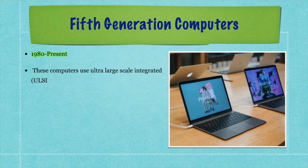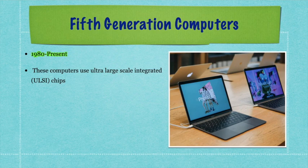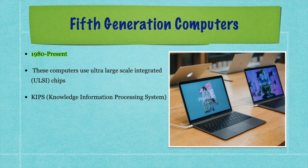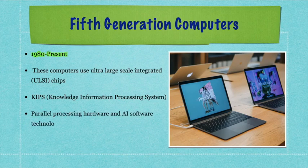In fifth generation computers, Ultra Large Scale Integrated (ULSI) chips are used, with millions of transistors and capacitors on a single chip, making processing very fast. A knowledge information processing system is used, and artificial intelligence is a key feature. Memory chips were introduced in this generation, along with parallel processing hardware and AI software technology.